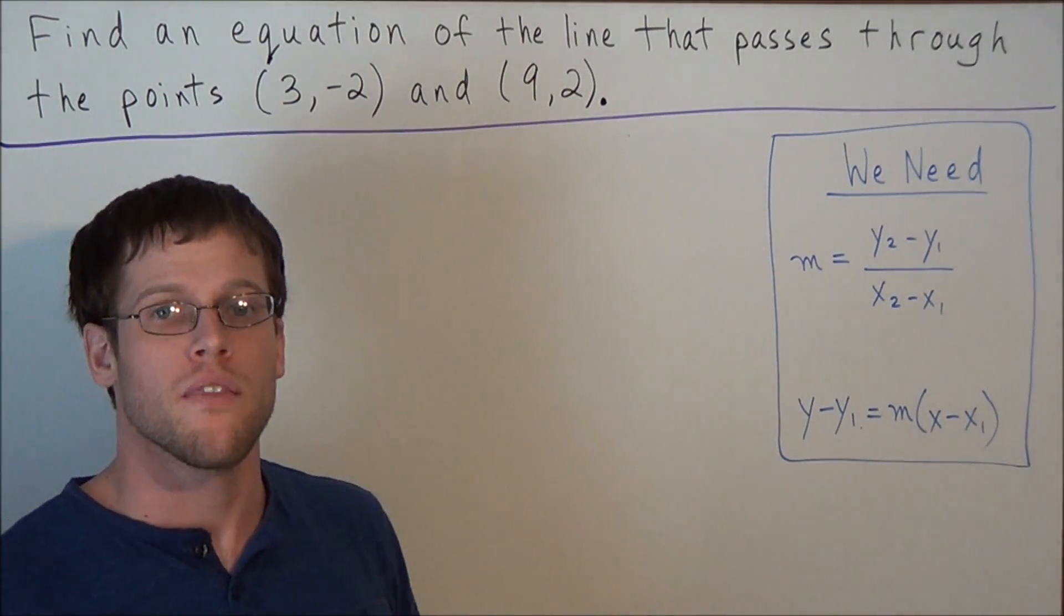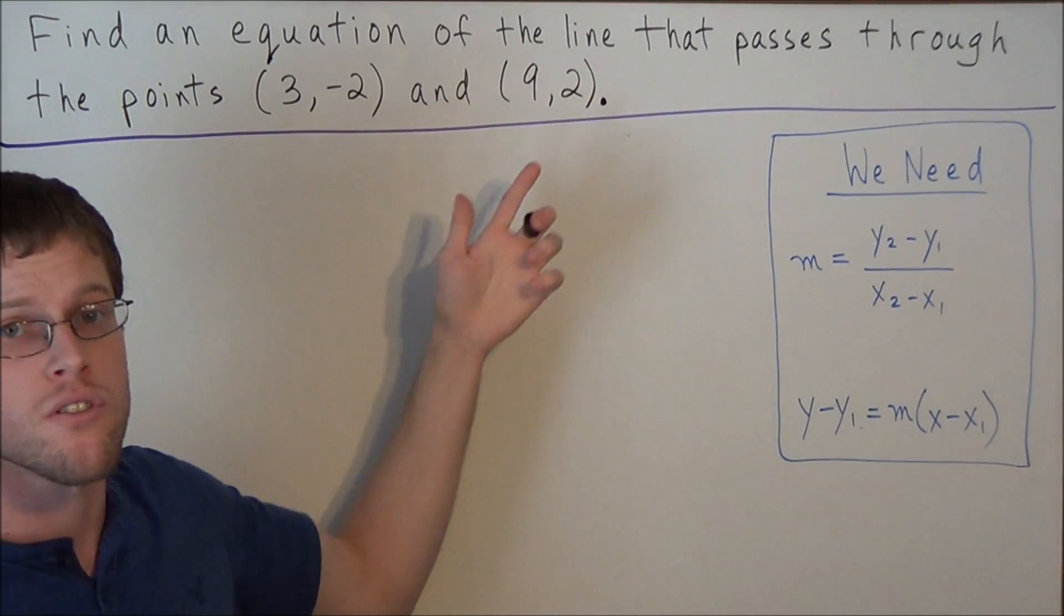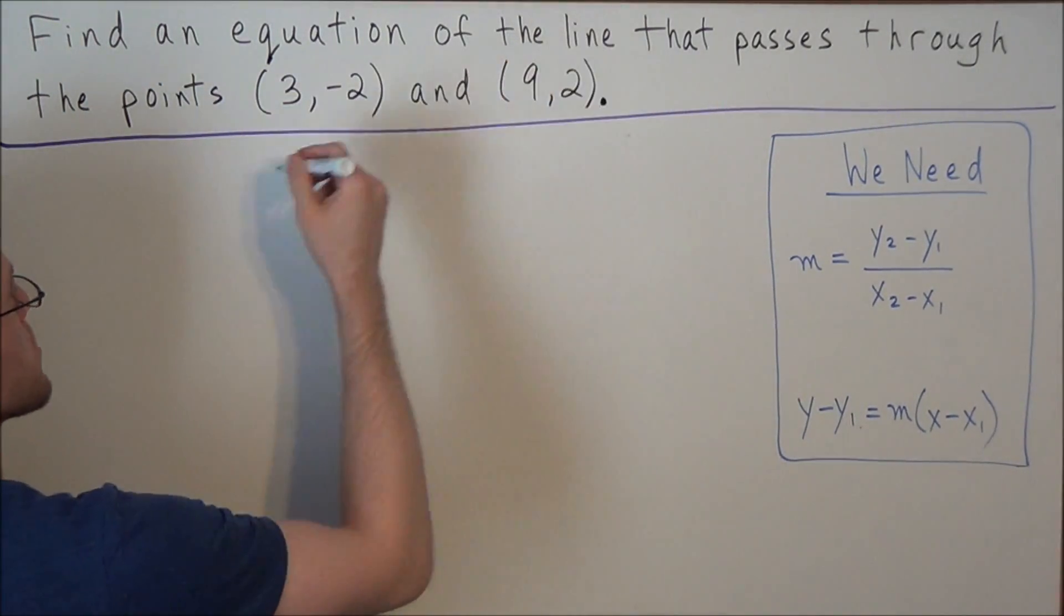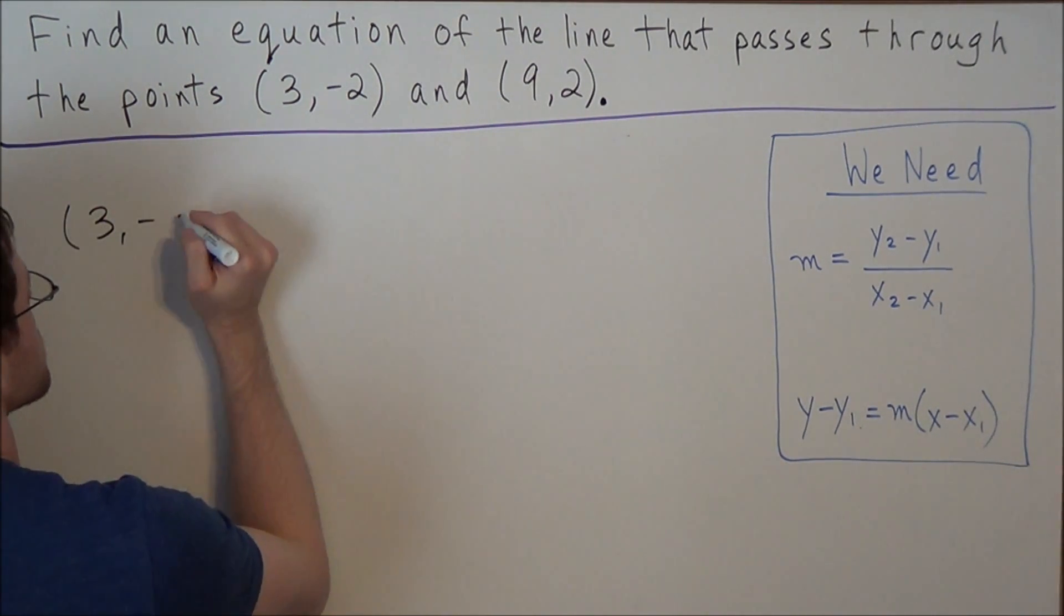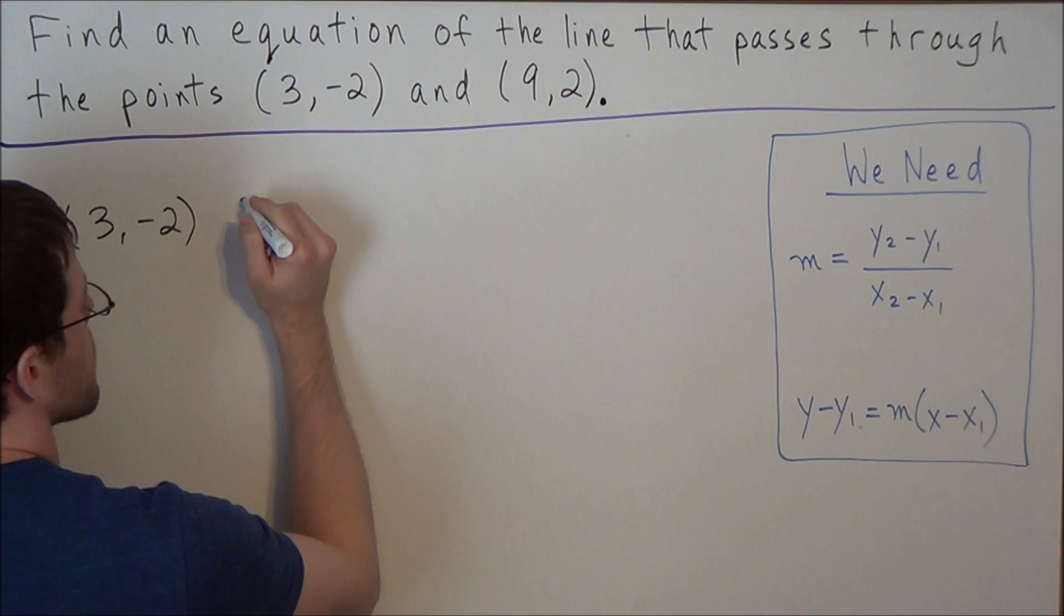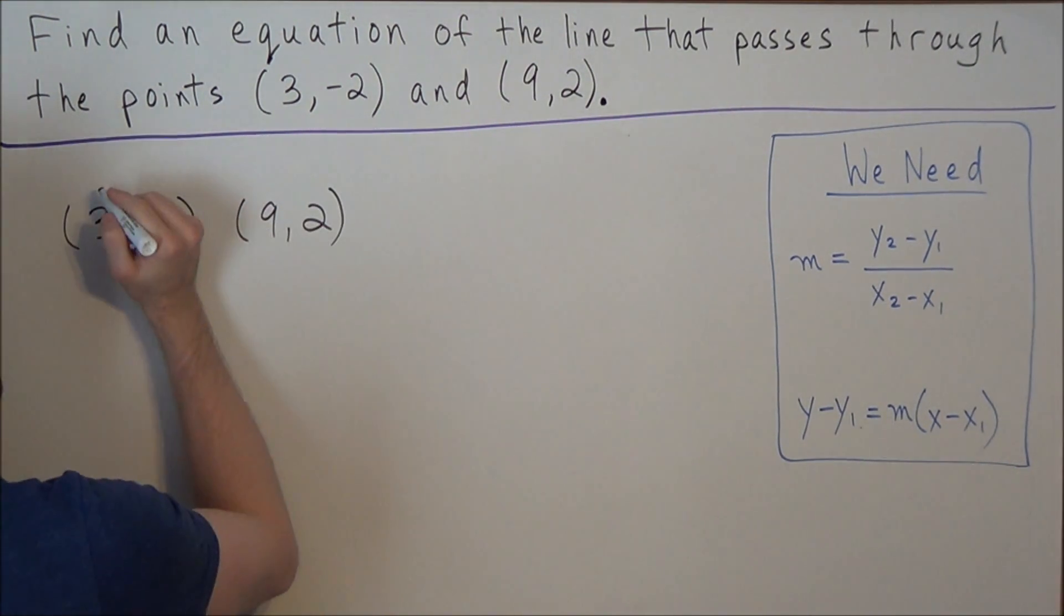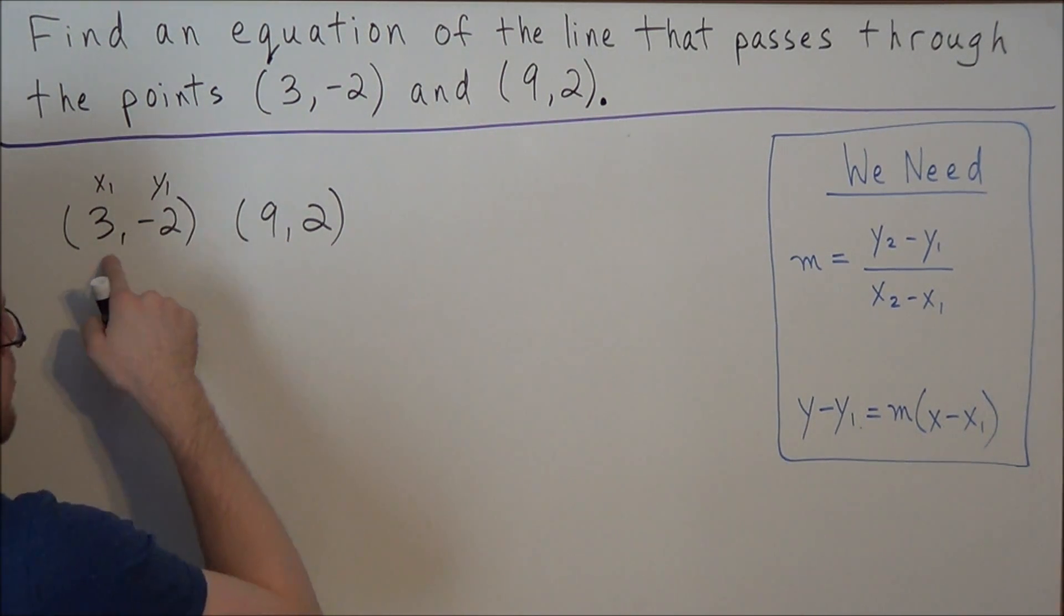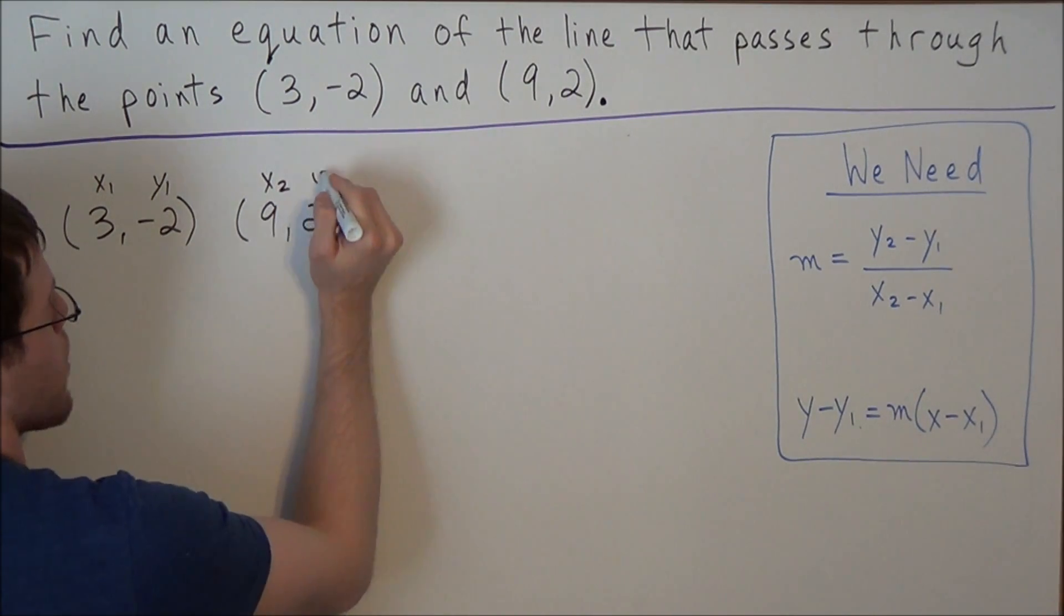But for this example, we don't have a slope given to us. So the first thing we want to do is find the slope between the two given points. So we're looking at the points (3, -2) and the other point is (9, 2). So what we could do first is label our points as our x1, y1. We could call our first point the x1, y1 and our second point we'll call it x2, y2.